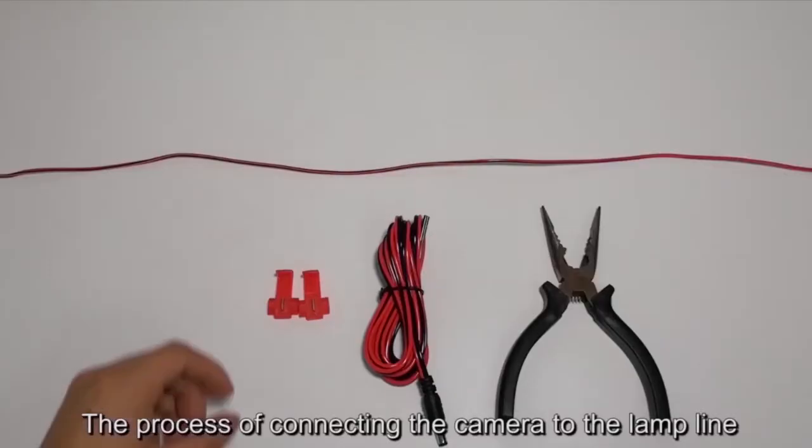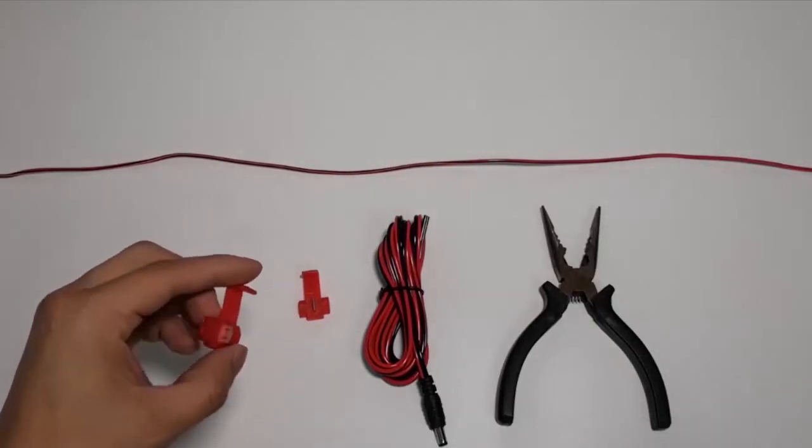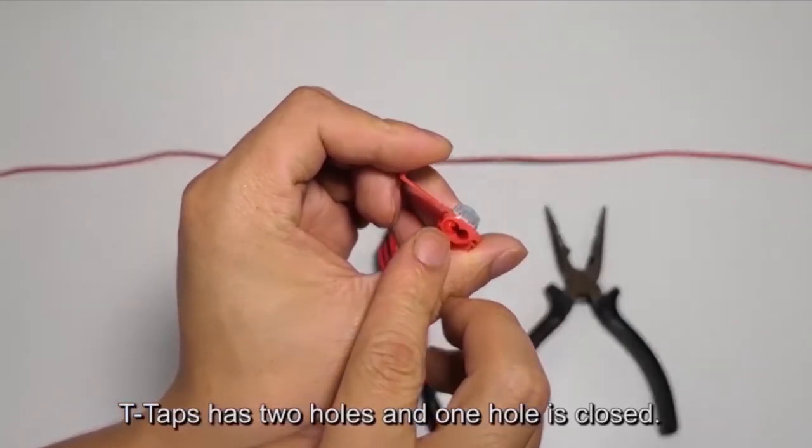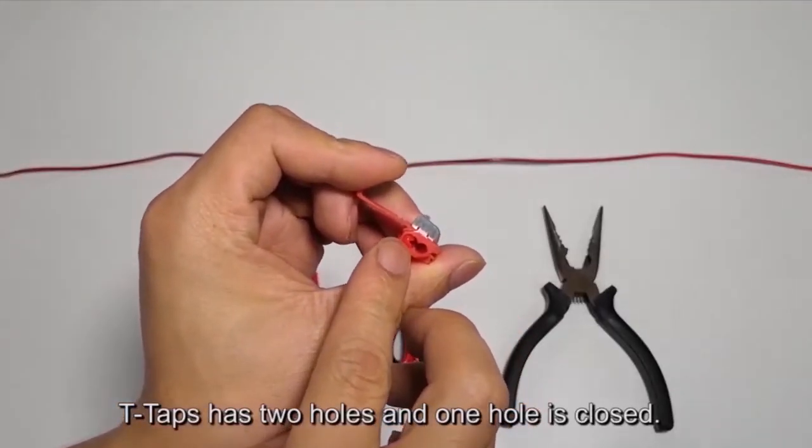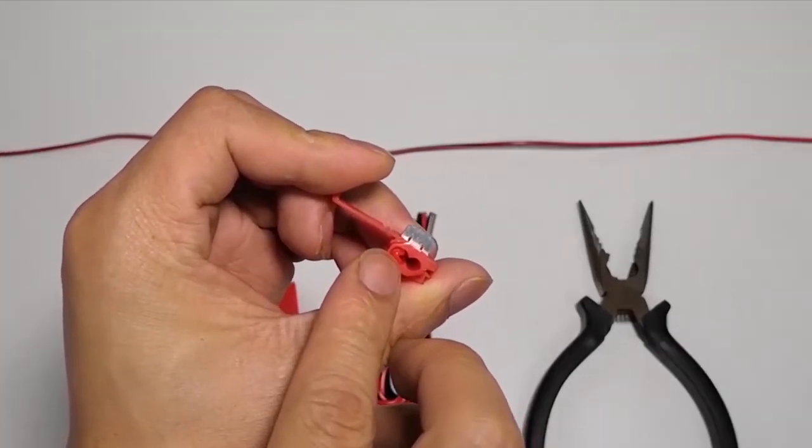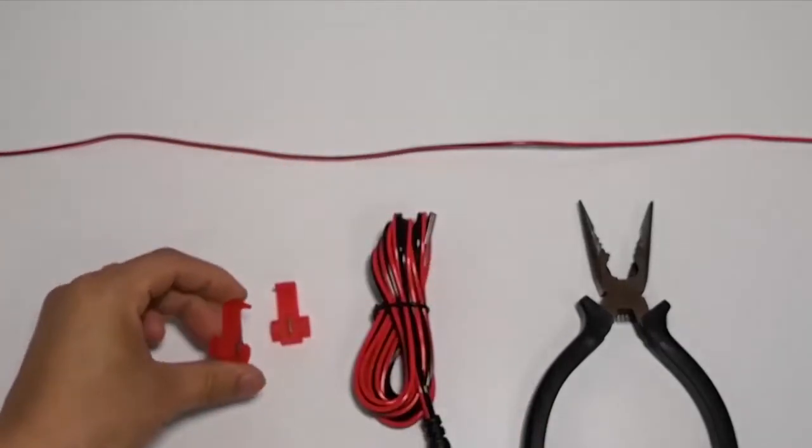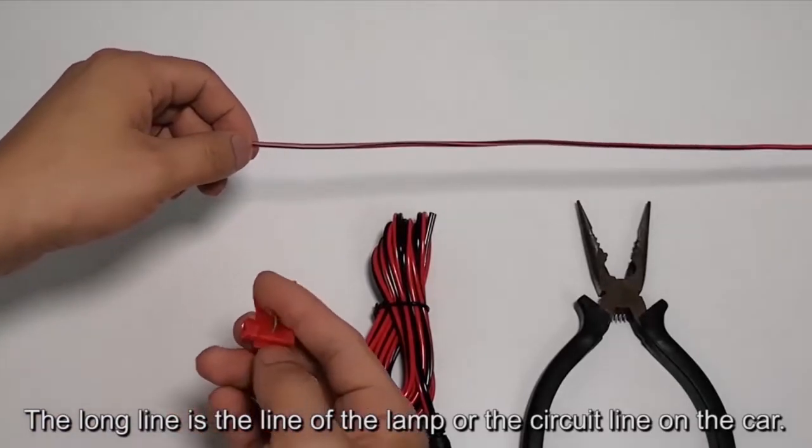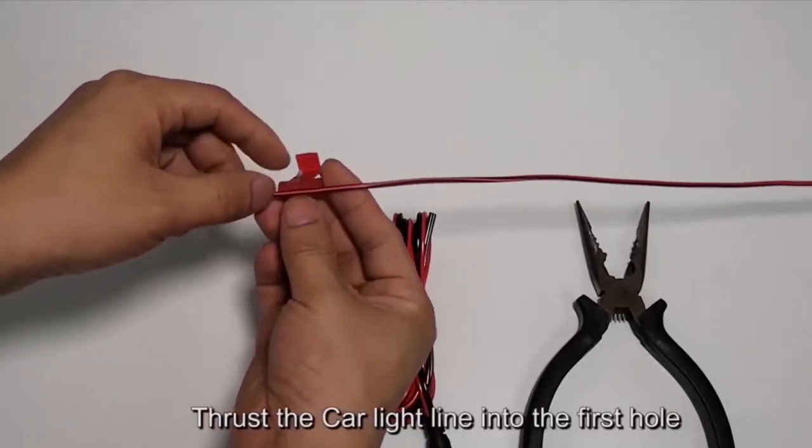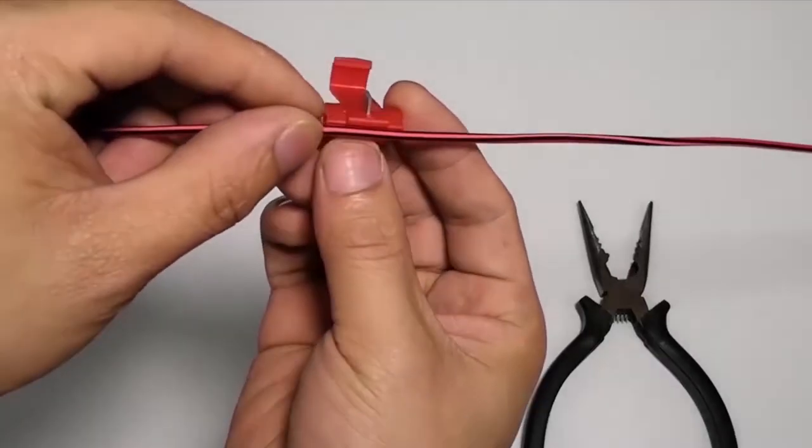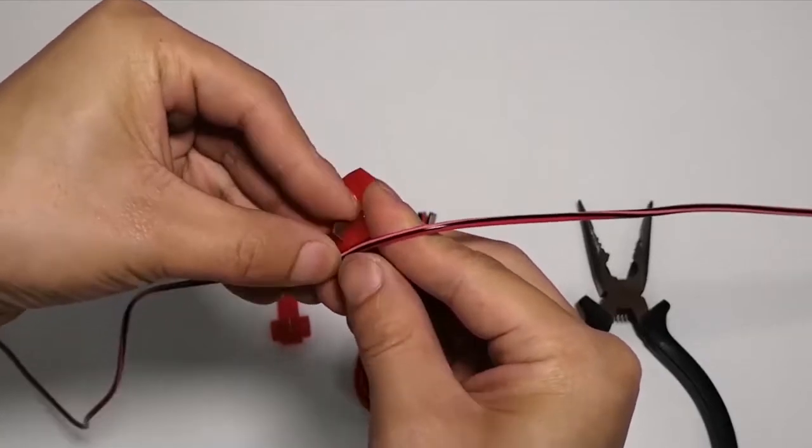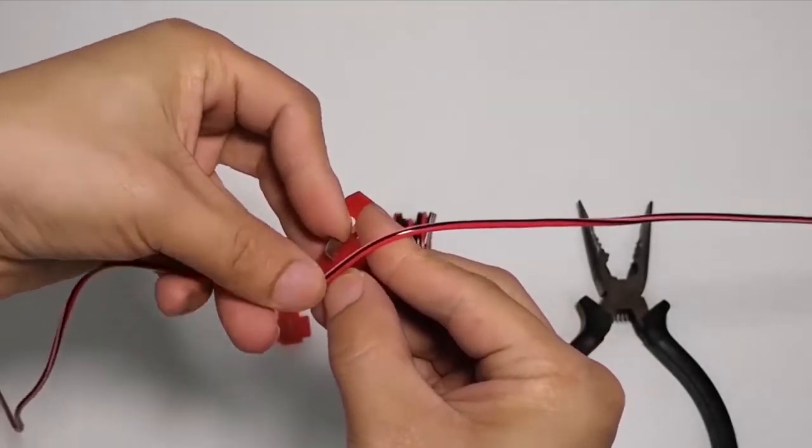The process of connecting the camera to the lamp line. T-taps. T-taps has two holes and one hole is closed. The long line is the line of the lamp or the circuit line on the car. Thrust the car light line into the first hole. The line is closed.